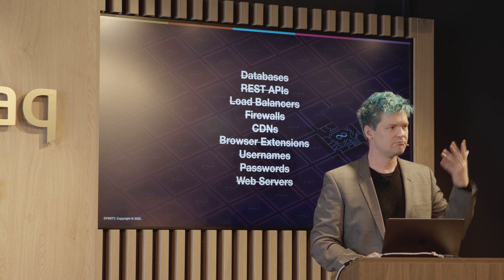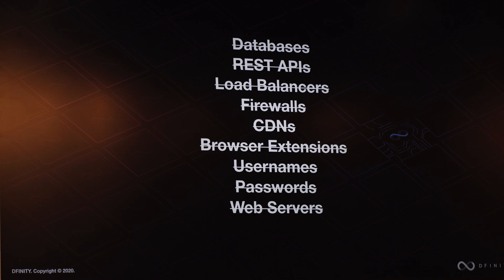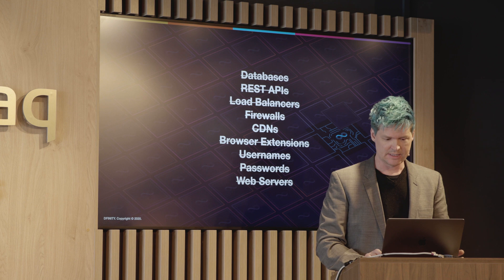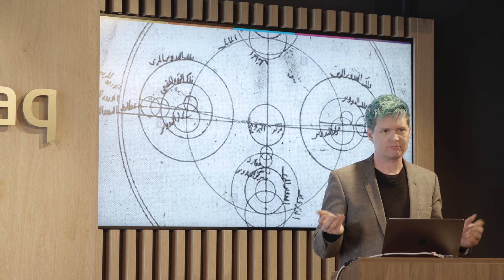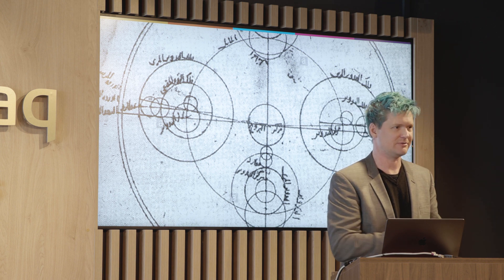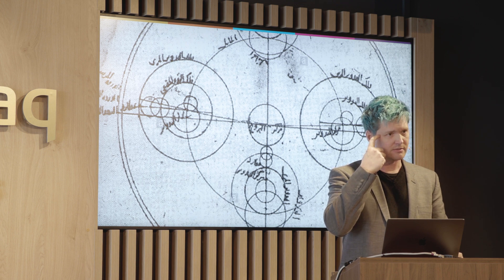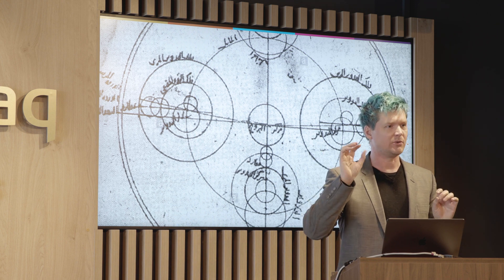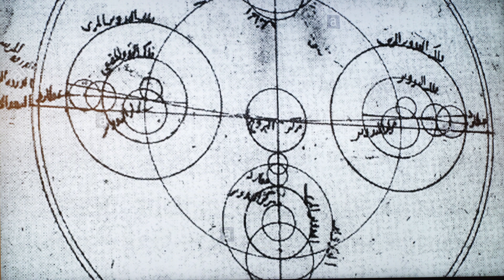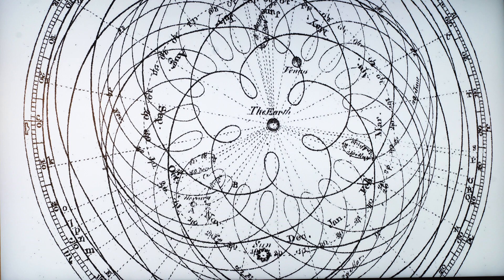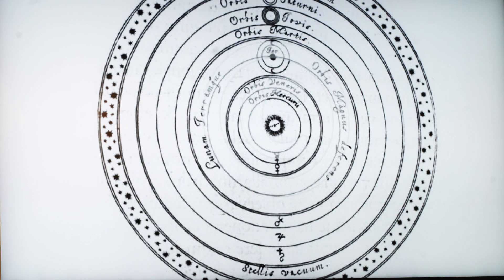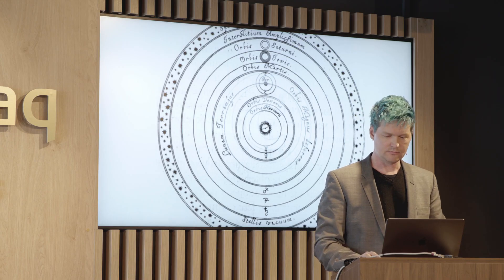So let's check our list: databases, REST APIs, load balancers, firewalls, CDNs, browser extensions — did you see any browser extension? To an end user that app was exactly like any other web app. Usernames, passwords, web servers — it's all gone. Kind of replacing the legacy IT stack. These are things that as a developer I don't especially want to deal with, and now I don't have to. It's a paradigm shift. When we believed that the earth was the center of the universe, we had to add all this extra stuff — epicycles and deferents — to explain why planets weren't where the model said they should be.